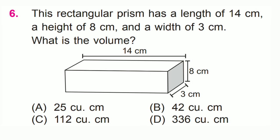A rectangular prism has a length of 14 cm, a height of 8 cm, and a width of 3 cm. What is the volume?